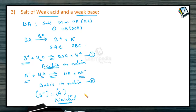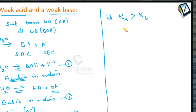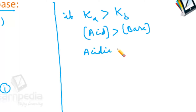In other words, it depends upon KA of the acid and KB of the base. If KA is greater than KB — that is, the ionization constant of the acid is more than that of the base, meaning the acid is stronger than the base — therefore the solution becomes acidic in nature.